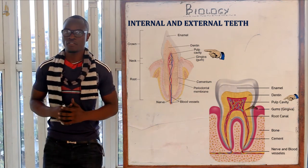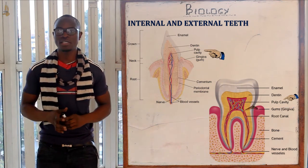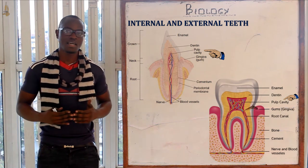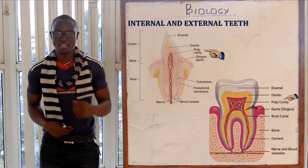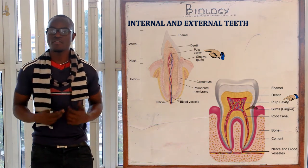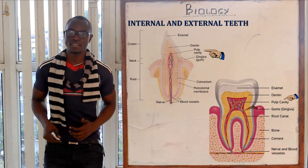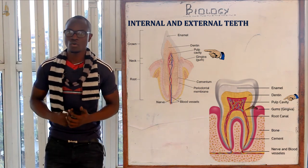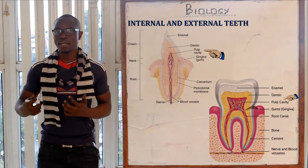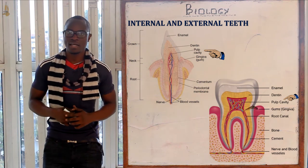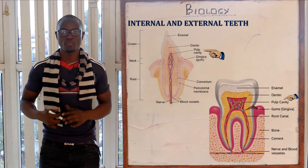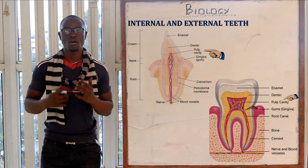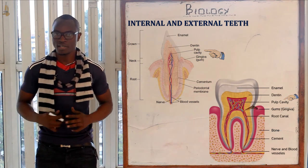The next part is the pulp cavity, which mainly contains blood vessels and nerve endings. The blood vessels supply the teeth with essential nutrients, while the nerve endings detect and help respond to stimuli such as coldness or hotness of a substance.